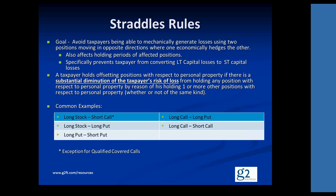The goal of doing straddles back in the 70s was for taxpayers to generate losses which they would typically offset against other gains they had. The great thing about straddles is you can manufacture long-term or short-term losses depending on what you needed. The goal of the straddles rule when it was introduced was to make it impossible to just buy and sell two different securities that had similar risk profiles in order to generate losses.